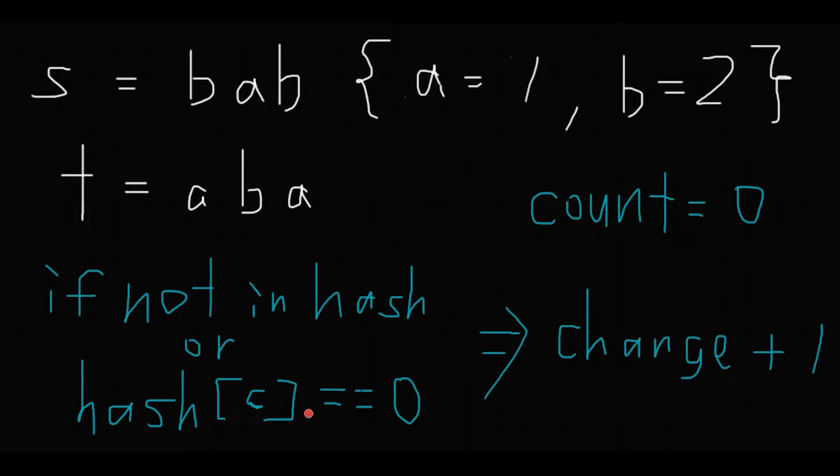Otherwise, minus 1 from the key that is the same as current character from t string. So let's begin. First of all, we find a. If not in hash, but this hash table has a, or hash a equals 0, a is 1 currently, so in that case minus 1 from the hash table, so 0.